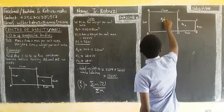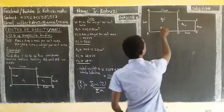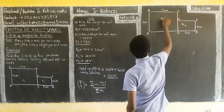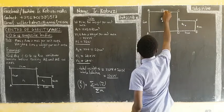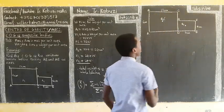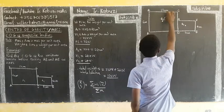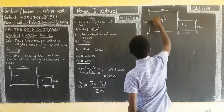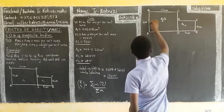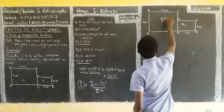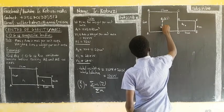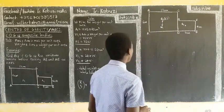Now our task is to find the coordinates of these centroids. For the first rectangle, from the AB axis, the horizontal distance to the center is half of 12, which gives us 6. And from the AE axis, the vertical distance is half of 6, which gives us 3. So the first weight W1 = 72W acts at coordinates (6, 3).